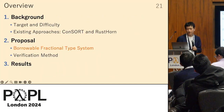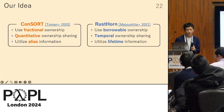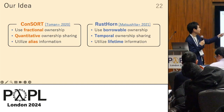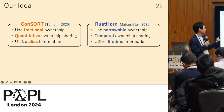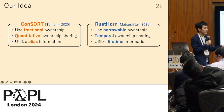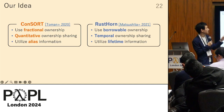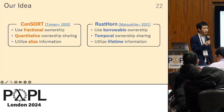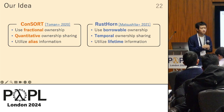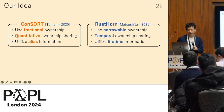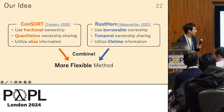Our proposal combines the two existing approaches. Consort uses fractional ownership, which is good at quantitative ownership sharing, and utilizes aliasing information in its typing. RustHorn uses borrowable ownership, which is good at temporal ownership sharing, and utilizes lifetime information in its typing. The idea of our research is combining these two to get a more flexible method.